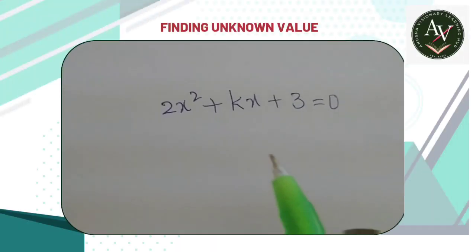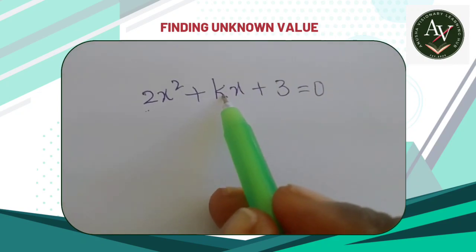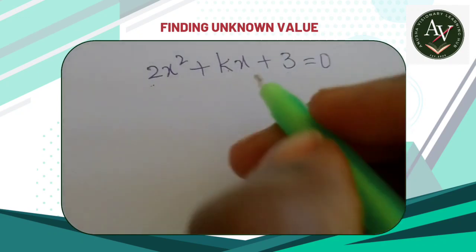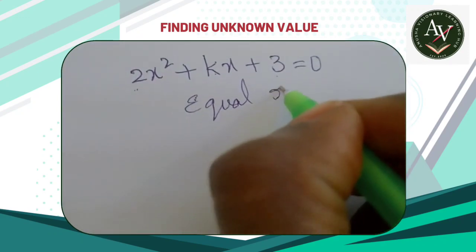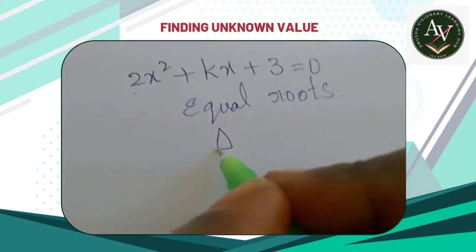Hello students, let's learn about finding the unknown value if the given quadratic equation has equal roots. It has equal roots. Means what? Delta will be zero.